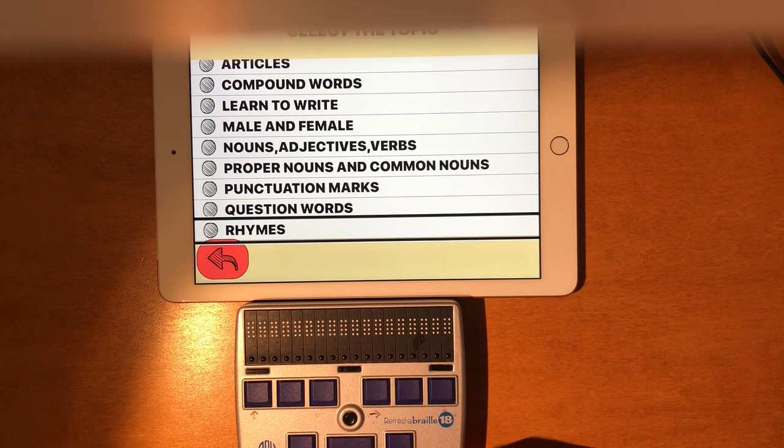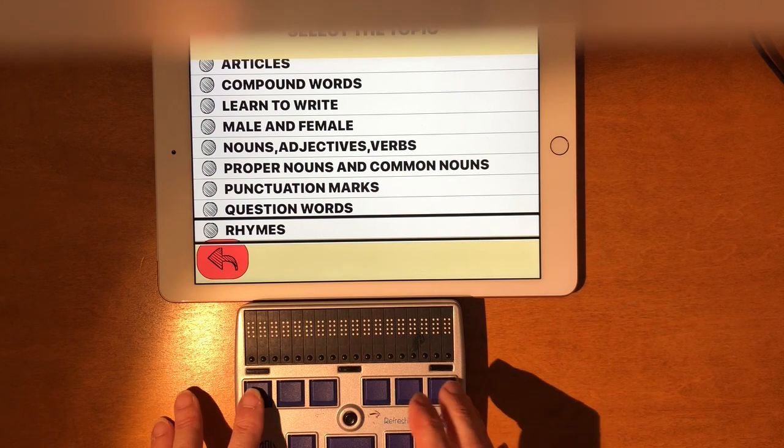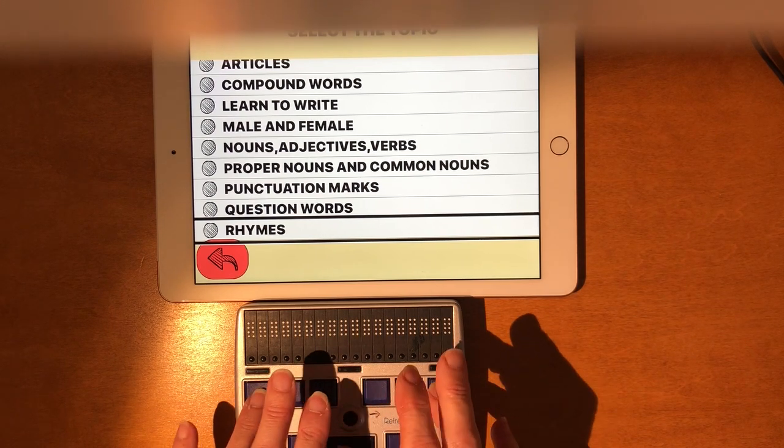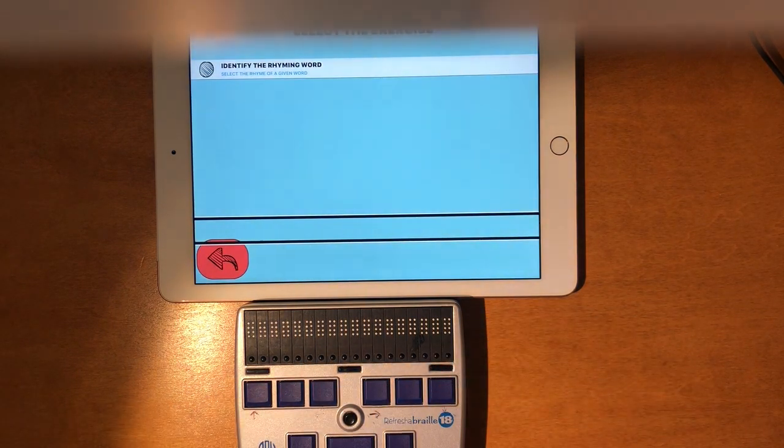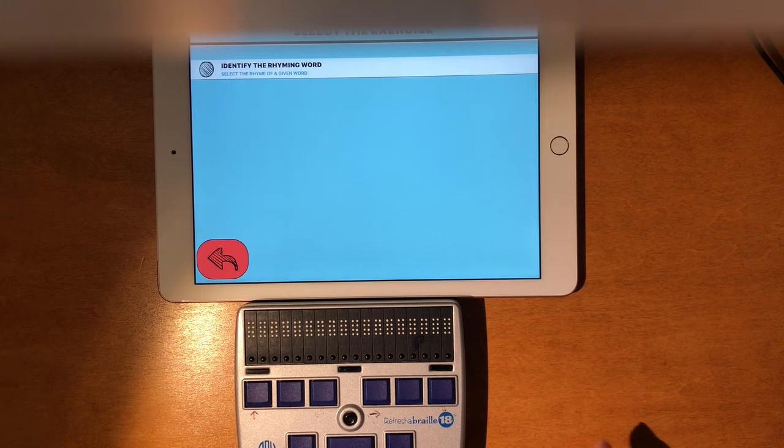There's Rhymes. I'm going to select that. I can either push the joystick in or I can do dot 3 and dot 6, dot 3, dot 6 chord, dot 3, dot 6, and space all simultaneously. We'll select.